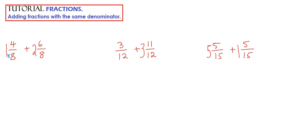So 8 times 1 is 8, plus the numerator, which is 4, is 12. So 1 and 4 eighths can be renamed as 12 eighths. And the same process can happen over here. 8 times 2 is 16, plus the numerator, that's 22. So 2 and 6 eighths can be renamed as 22 eighths.